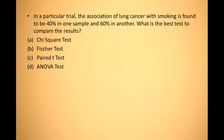Next question: in a particular trial, the association of lung cancer with smoking is found to be 40% in one sample and 60% in another sample. What is the best test to compare the results? Two proportions from two different samples are to be compared, so the best test is the chi-square test.